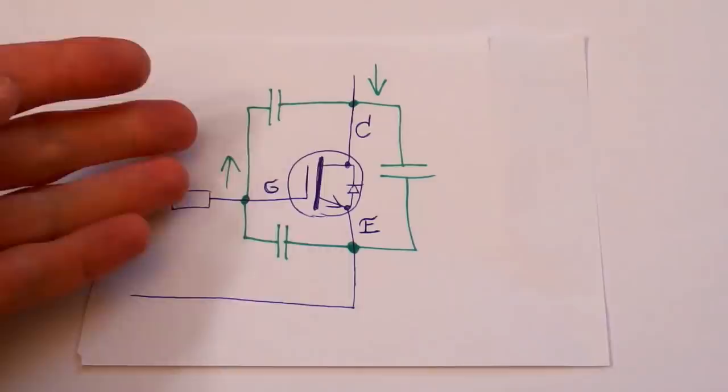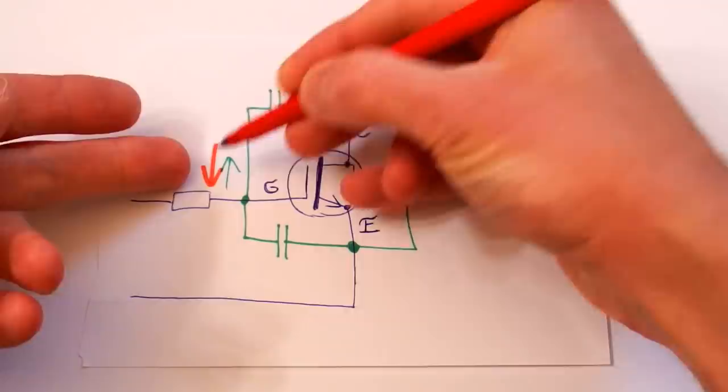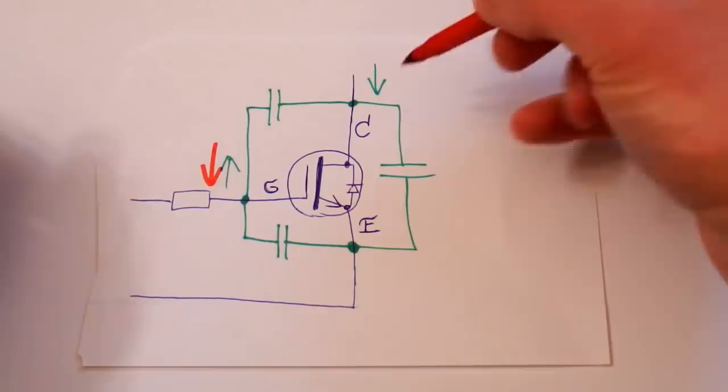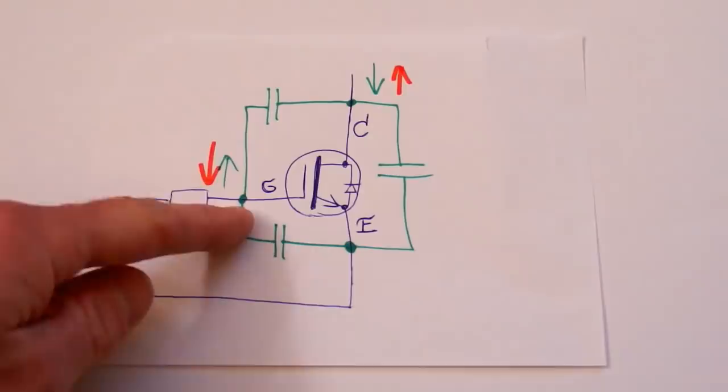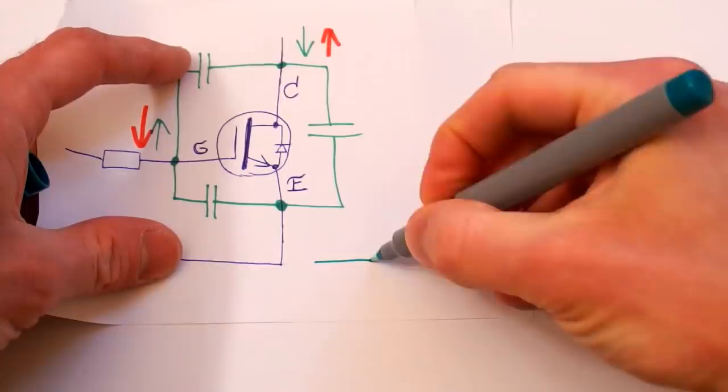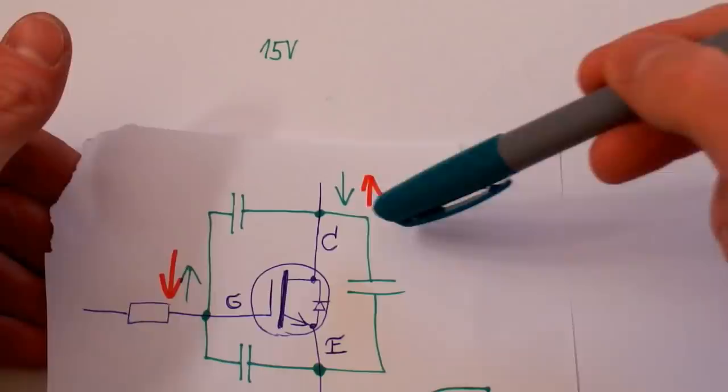A similar problem happens when you want to turn it off. When you turn it off, you pull the gate voltage down, but as it's turning off, the load pulls the collector voltage up when the transistor is no longer conductive. So the collector voltage goes up, and it pulls the gate voltage up too — again working against the gate driver. Without any load, you simply charge or discharge the gate cleanly.